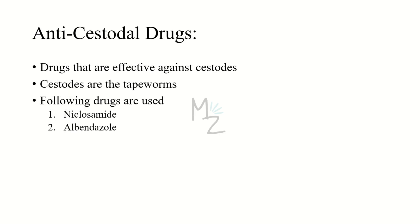Now let's talk about anticestodal drugs — drugs that are effective against cestodes. Cestodes are the true tapeworms; they typically have a flat, segmented body and attach to the host's intestines. Like trematodes, tapeworms lack a mouth and a digestive tract throughout their life cycle. The anticestodal drugs are niclosamide and albendazole.